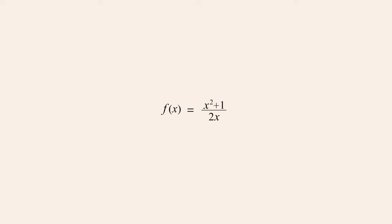As an example, let's consider the rational function x-squared plus one over two x. The leading terms of this function are x-squared and two x. Since the numerator's leading term has an exponent of two and the denominator's leading term has an implied exponent of one, the numerator exponent is one greater than the denominator exponent, and so this asymptote is described by a first-degree polynomial function — in other words, a slanted line. We therefore know that this function has an oblique asymptote, although we have not yet determined the slope and position of this asymptote.